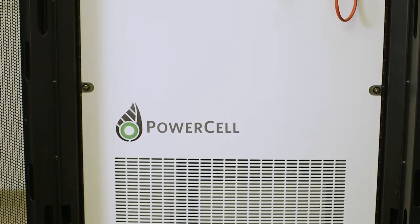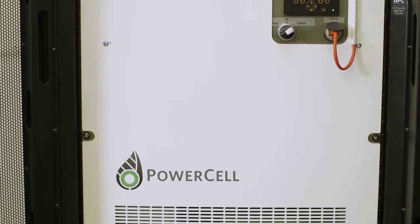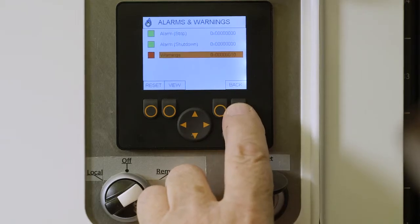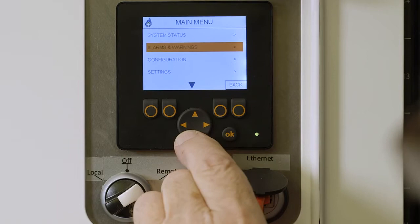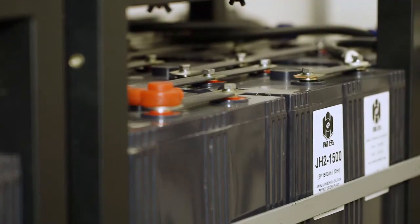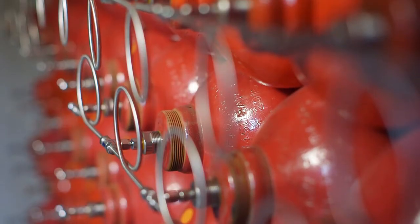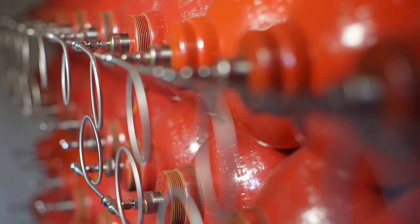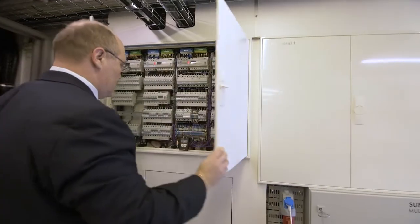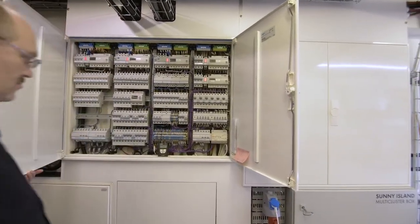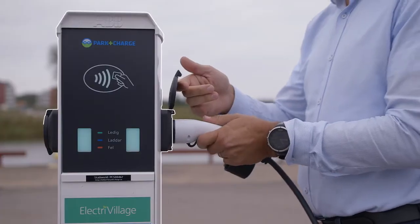The fuel cell you see here is a PEM version and the main function of the fuel cell is to charge the battery storage. At the same time as it charges the batteries to a predefined state of charge, it also delivers thermal heat that is used for heating the house and producing warm water.